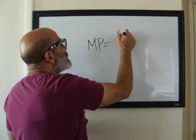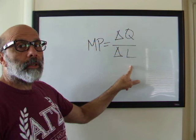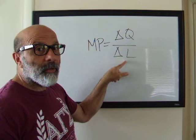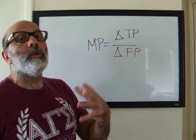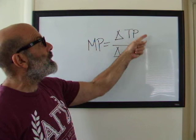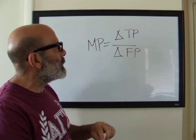Marginal product, or marginal physical product, is the change in quantity divided by the change in labor. It's a little more specific, but this is all in units of output and units of input — the goods and services our firm is producing and the factor of production labor. We can rewrite this as the change in total product divided by the change in some factor of production. So MP says this is how much your total product changed when you changed a particular factor of production, but there's no money in this function.